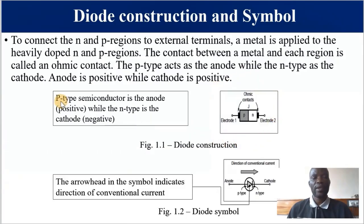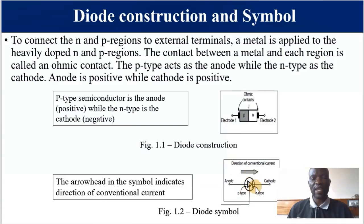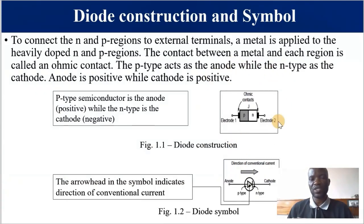The P-type semiconductor becomes the anode — because it has holes as majority charge carriers, so it is positive — while the N-type becomes the cathode, meaning negative, because its majority charge carriers are electrons. In electronic circuits, we use a schematic symbol. The P-type material is the anode and the N-type material, which is the band, is the cathode. The arrowhead in the symbol indicates the direction of conventional flow of current. You must be able to represent both the construction and the schematic symbol of a PN junction diode.